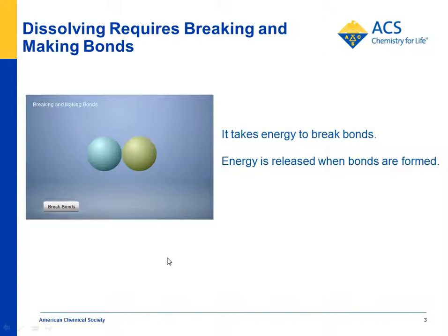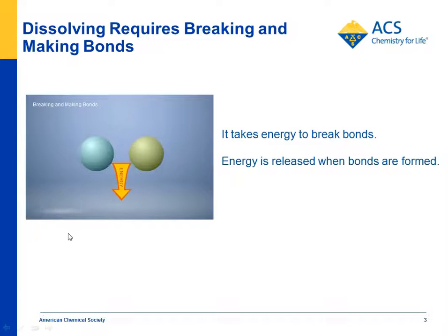We try to give students an idea of why this is happening — why does dissolving involve a temperature change? This is a little prelude to part of chapter six: it takes energy to break bonds and energy is released when bonds are formed. That's normally dealt with in a chemical reaction, but we're going to apply it to the process of dissolving because it's really the same process at work. We don't get into this too deeply with middle school students.